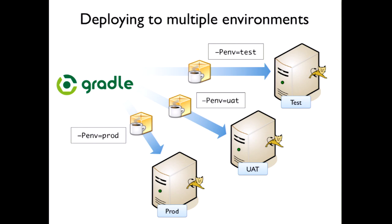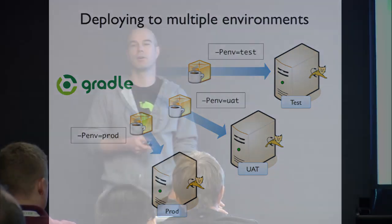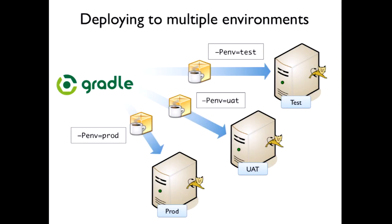To deploy to multiple environments, Gradle doesn't have built-in profiles like Maven, but it's simple to achieve. Pass a project property on the command line — for example, '-P env=qa' — and internally in your script decide which configuration and logic to run based on that property. You can also externalize environment-specific configuration into script plugins.